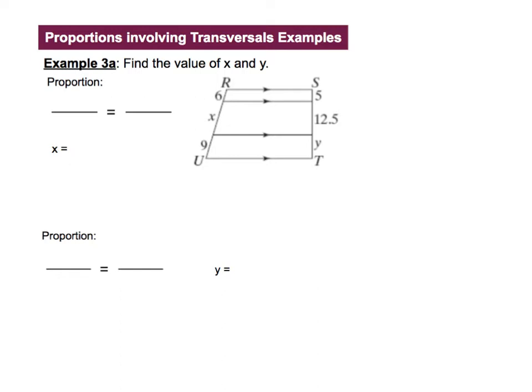So in this picture, we have two transversals. RU is a transversal, and ST is a transversal. Remember that if parallel lines intersect two transversals, then the segments intercepted on the transversals are proportional.